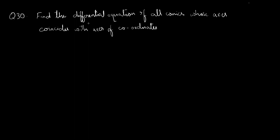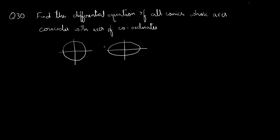Question 30: Find the differential equation of all conics whose axes coincide with the axes of coordinates. Since we are dealing with two axes in conics, we have three such shapes which have two axes: the first one is a circle, another one is an ellipse, and another one is a hyperbola.